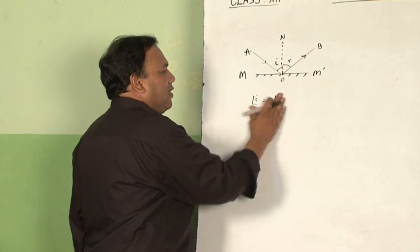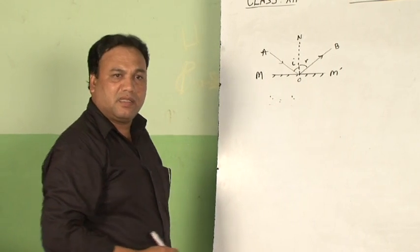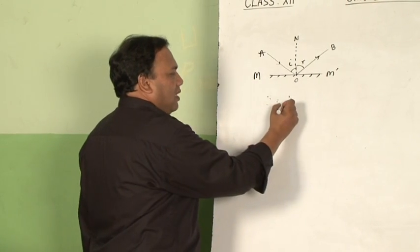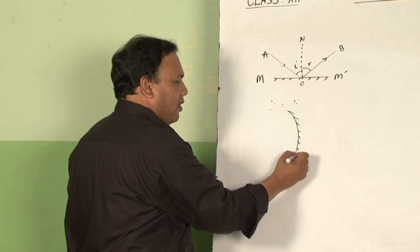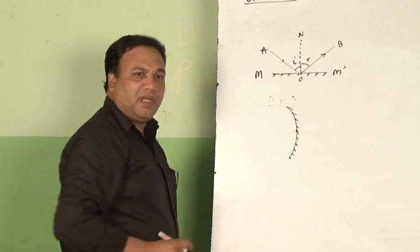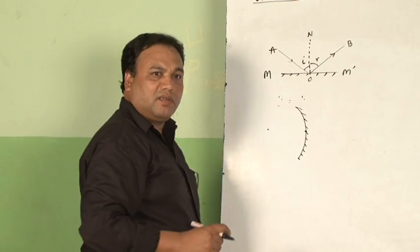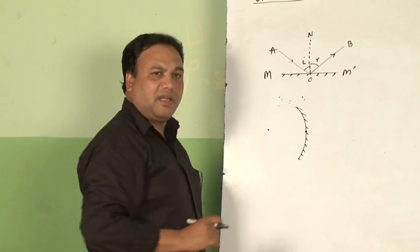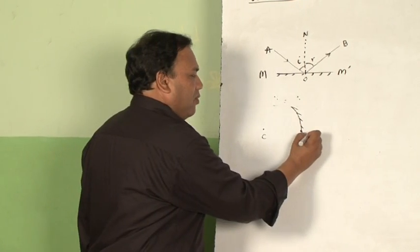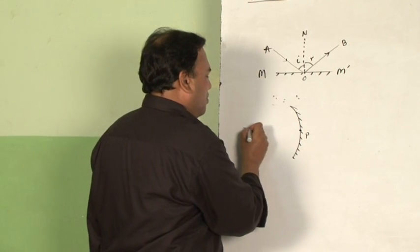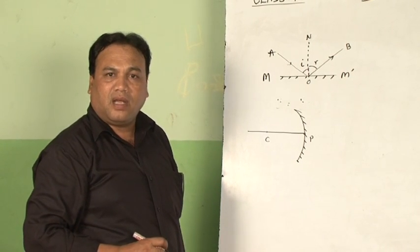In the case of spherical mirrors, let me explain how reflection takes place. I am taking one spherical mirror of the concave type. The center of the mirror is known as the pole. The center of the sphere whose small part we have taken as the concave mirror is called the center of curvature. A line passing through C and P — the center of curvature and the pole — is called the principal axis.